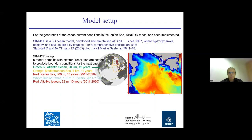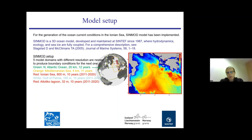On the globe figure, we have some model domains currently in use. The green one with an arrow is the North Atlantic, which we have run for 12 years at 20-kilometer resolution, nested to a model for the Mediterranean Sea at 4-kilometer resolution, and then nested again to the Ionian Sea. To the left is the southern part of Italy, and to the right is Greece. The white rectangle represents the Gulf of Patras, which is the topic for this talk.